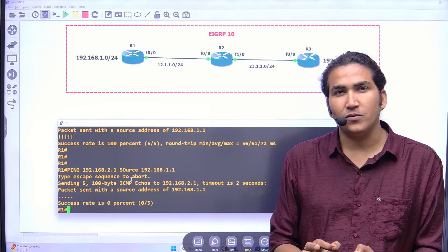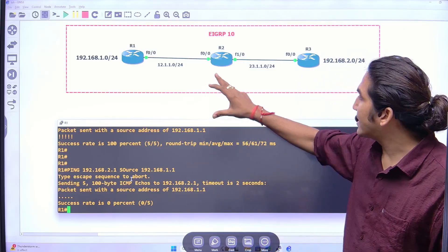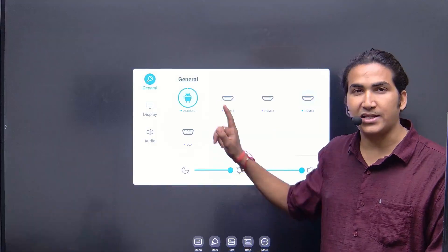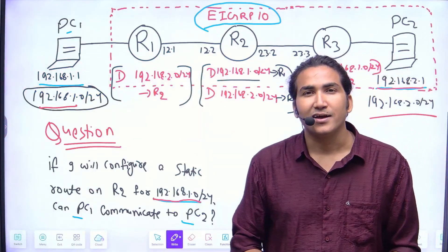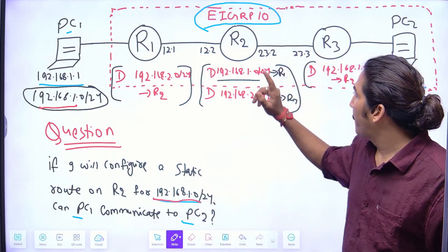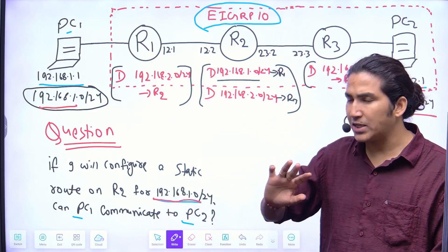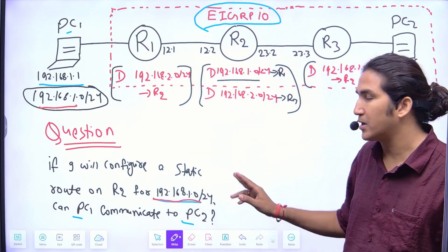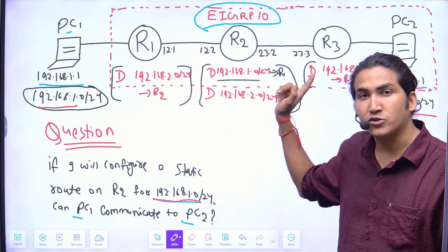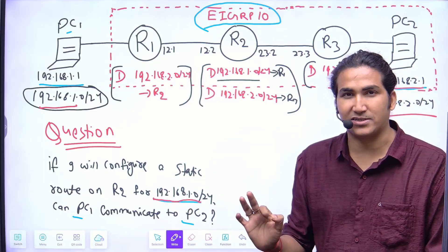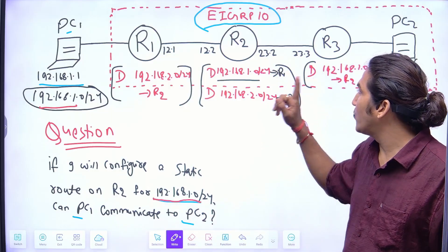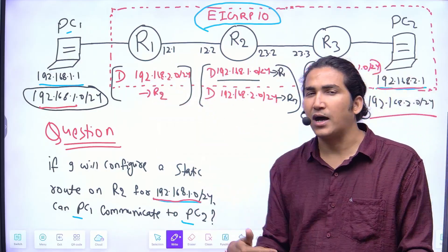Please pause the video, look at the scenario very carefully, and share your answer in the comment section — whether ping will work or not based on your existing knowledge. We have verified that ping is not working. Based on your knowledge, should PC1 and PC2 communicate or not? Now that we have added the static route and ping is not working, let me know the answer to both questions in the comment section.